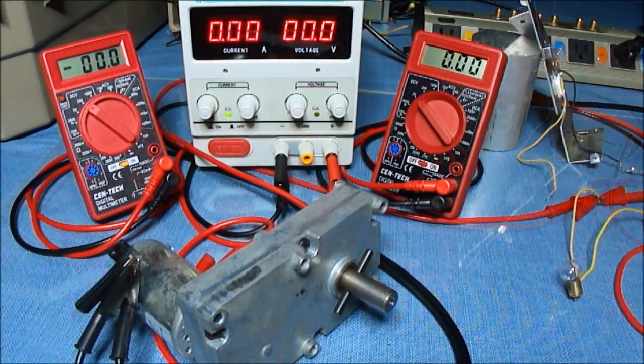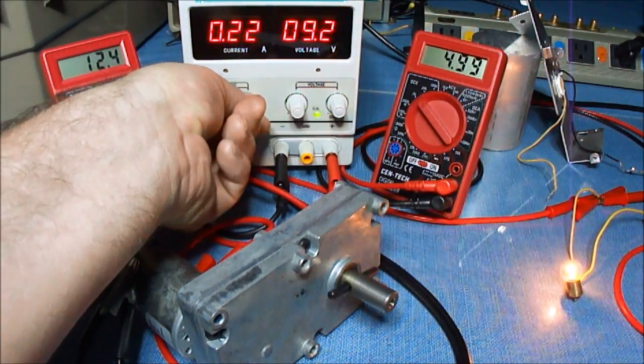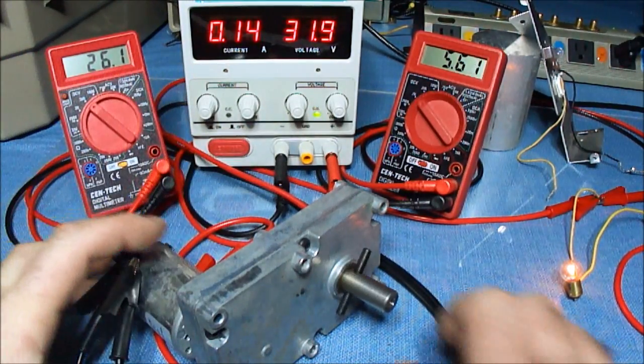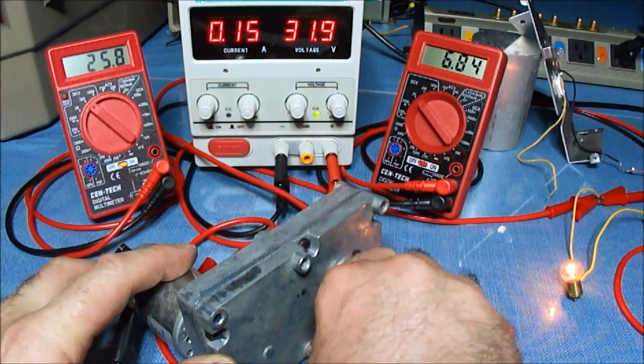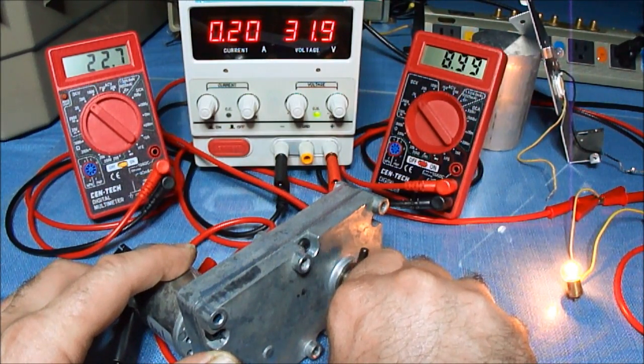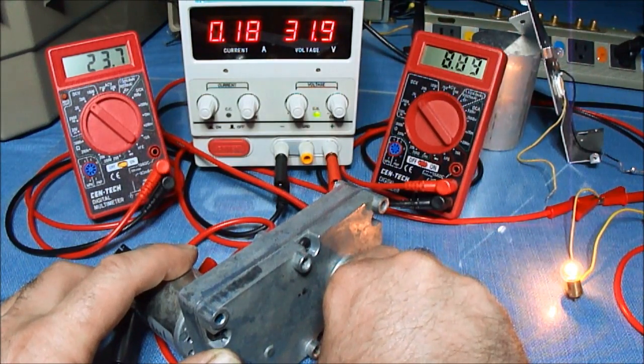Now I have an incandescent bulb hooked in series with the motor. Notice how the voltage transfers over to the bulb and the motor voltage drops.